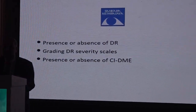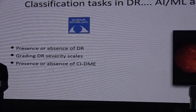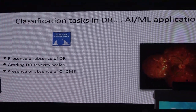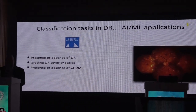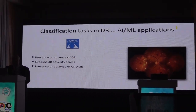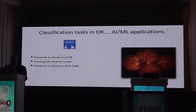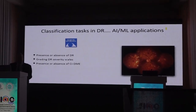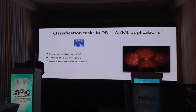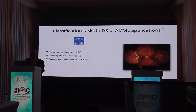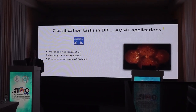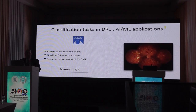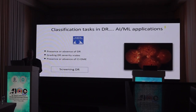There are certain tasks which AI and ML have been doing very efficiently — that is classification tasks: presence or absence of diabetic retinopathy, grading various diabetic retinopathy scales, and presence or absence of center-involving DME. Because it can very effectively and accurately do these, it definitely has a role in screening for diabetic retinopathy.